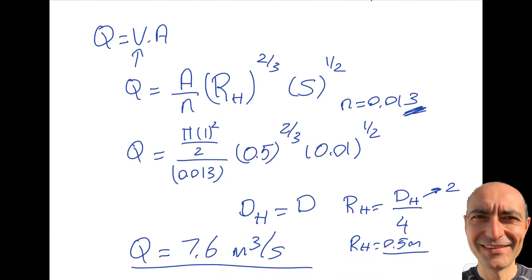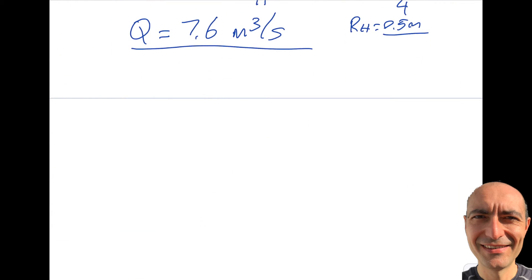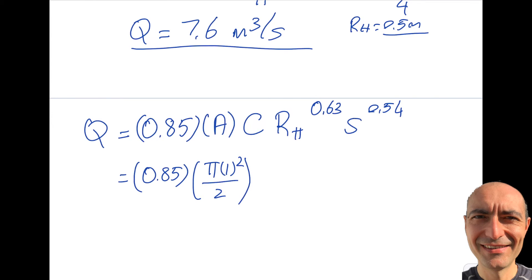Let me do the Hazen-Williams equation as well to make sure those two are close to each other. Here's what it looks like: 0.85 times A, C R_H to the power of 0.63, and then S to the power of 0.54.